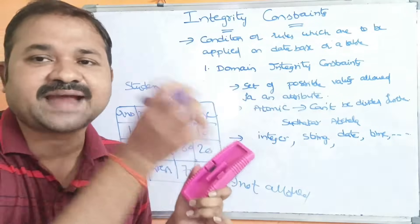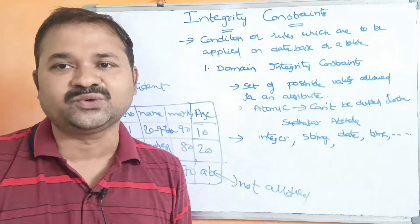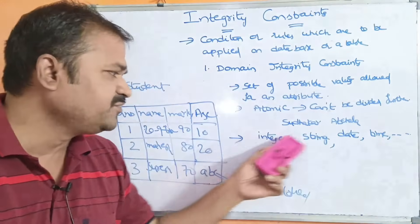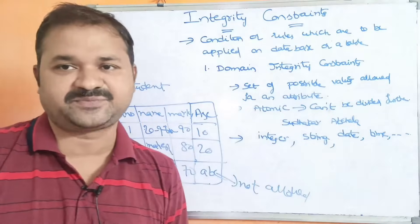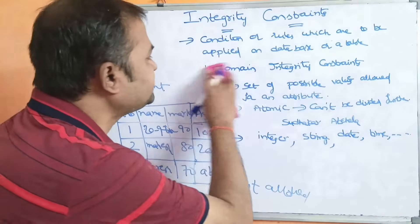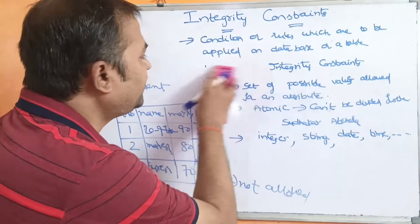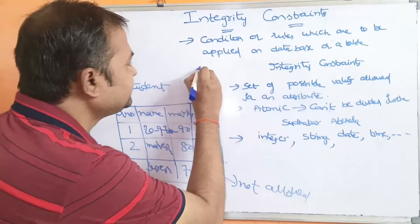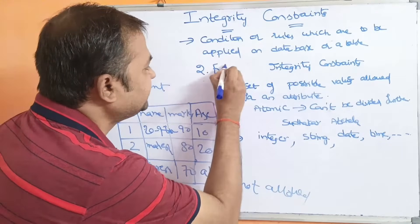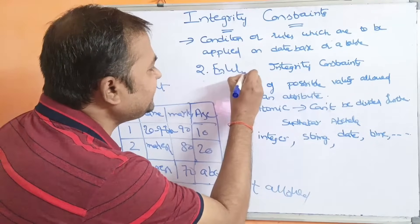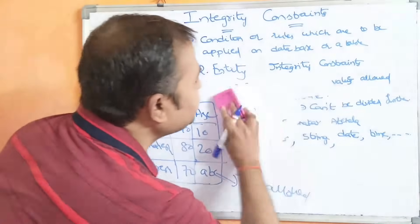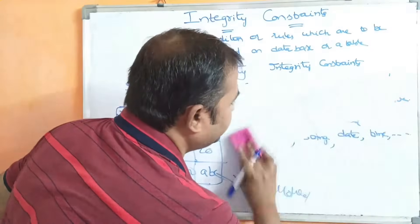So, domain means the attribute value, and in order to enforce the constraints, we use data types. Now let us see the second type of constraint. The second type of constraint is entity integrity constraint.